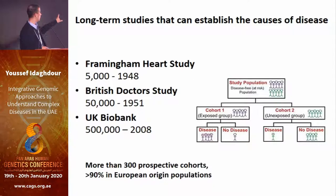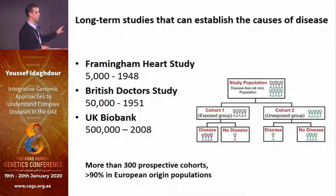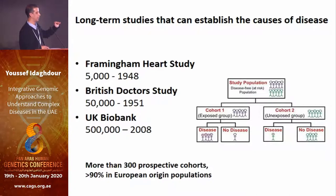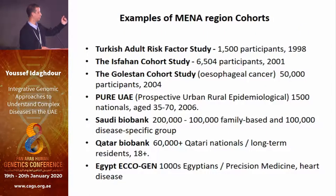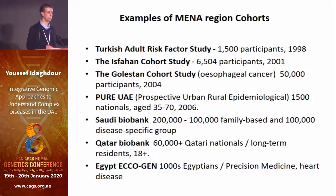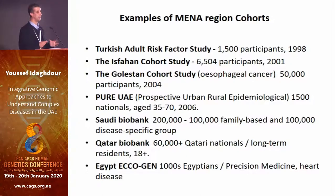There are many famous ones — the Framingham Heart Study is probably the most popular and the oldest. The UK Biobank is not exactly a cohort study but they are trying to do that as well. The idea is you sample populations, you have cases and controls, and you follow them over time. This is not an exhaustive list, but it shows the lack of cohort studies in the region.